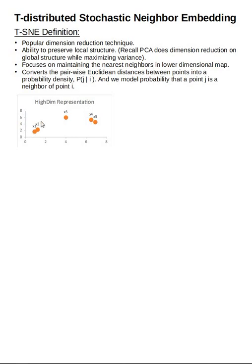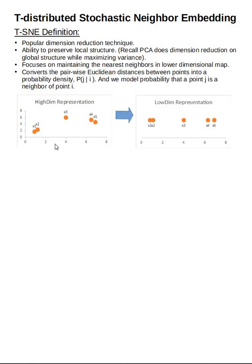Now, focusing on maintaining the nearest neighbors in the lower-dimensional map — when we convert the higher-dimensional representation and reduce dimensionality, going from a two-dimensional to a single-dimensional representation, T-SNE tries to keep data points that were close in the higher-dimensional space also close in the lower-dimensional representation. Just as X1 and X2 are closer in the high-dimensional space, they remain close in the lower-dimensional representation. Similarly, X3 is far from X1 in both dimensions.